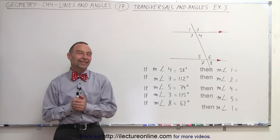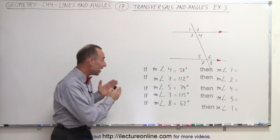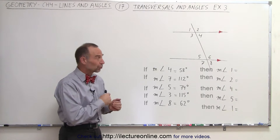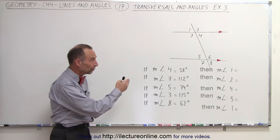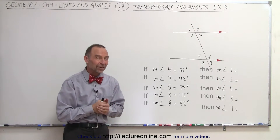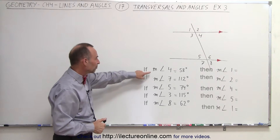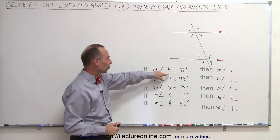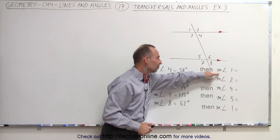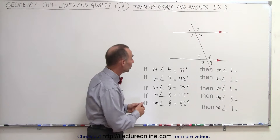Welcome to What Lecture Online. Here we're given a set of five angles with their measures and we're trying to determine the measures of the other angles given. Given that the measure of angle four is 58 degrees, what is the measure of angle one? Let's take a look.